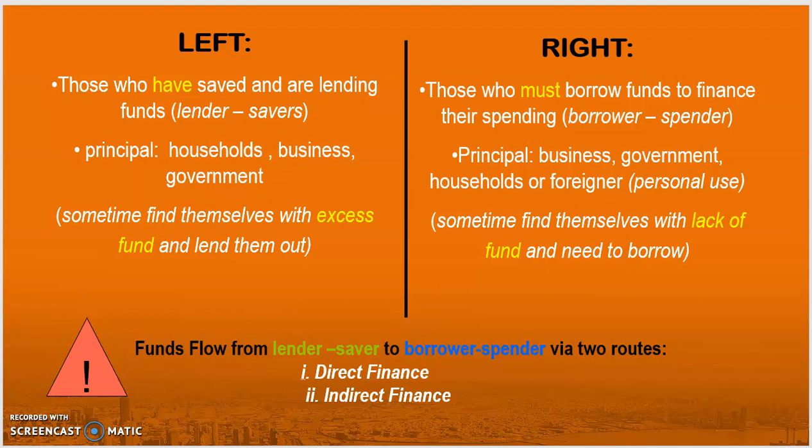Meanwhile, the right side of the chart describes the other parties, known as borrower-spenders, who are in need of loans to cover expenses or financial projects. The parties involved include businesses, government, and households who need funds for personal use or to cover the cost of planned projects. This party often lacks funds and needs loans from banks. The funds distributed from lender-savers to borrower-spenders are carried out in two ways: direct finance and indirect finance.